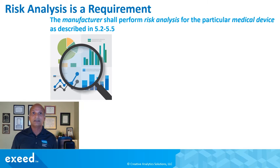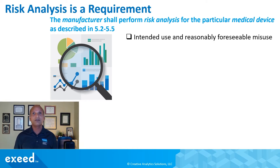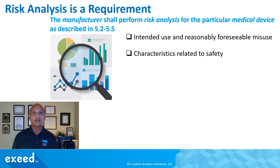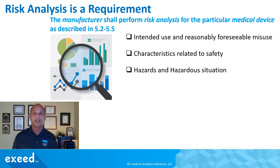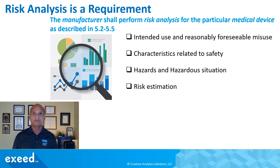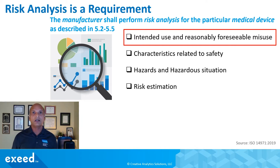Risk analysis is a requirement as described in clauses 5.2 through 5.5 in ISO 14971, and it starts with intended use and reasonably foreseeable misuse — that's the context for the risk analysis. Then you have to talk about characteristics related to safety, then look at hazards, hazardous situations, and harms, as we discussed using a PHA. And then you have to estimate the risk. Today we're going to focus on intended use and reasonably foreseeable misuse.